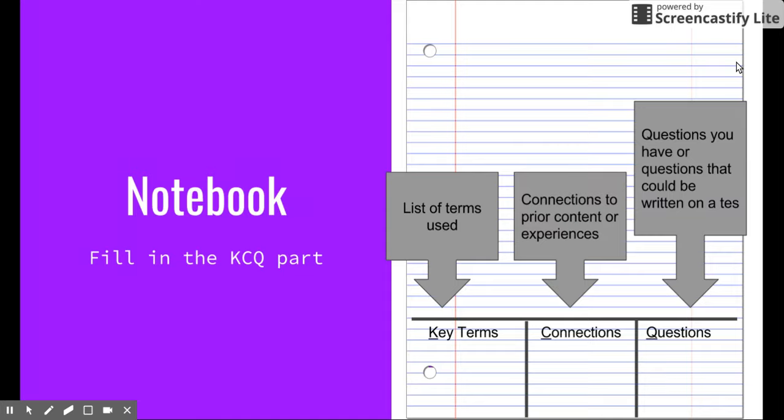All right, so that's all I have for notes. You might want to take some time right now and fill in the bottom part of your notebook. Now that you've gone through the notes, make sure you list the key terms. You don't need to write the definitions. Just write the key terms. Take some time to make some connections to prior content or experience. What have we talked about before in this class that can connect to stuff we've talked about in this page? Or maybe what are some things in life that you're familiar with that might also apply or have been applied in this that you can make those relationships?